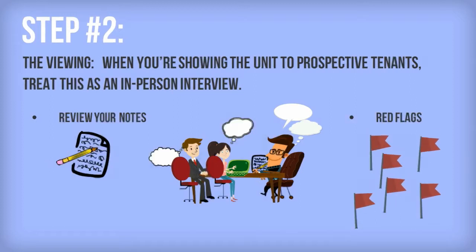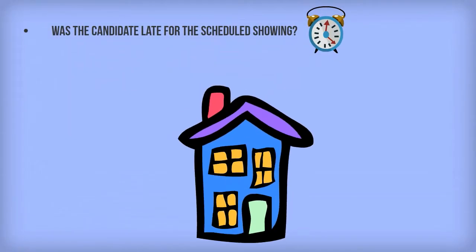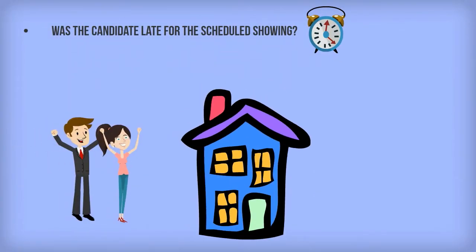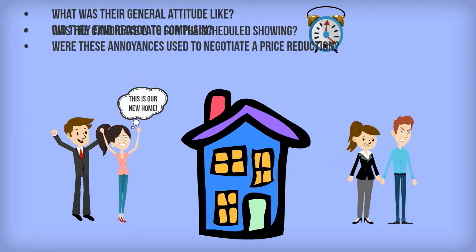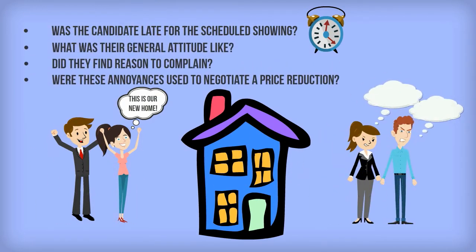Some red flags to be aware of: Was the candidate late for the scheduled showing? This tardiness might extend throughout your relationship if they become your tenant. What was their general attitude like? Did they find reason to complain about the property or seem easily put off or put out? Were these annoyances used to negotiate a price reduction?